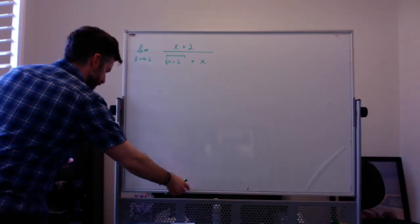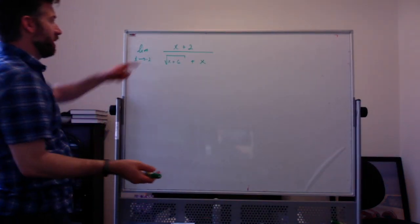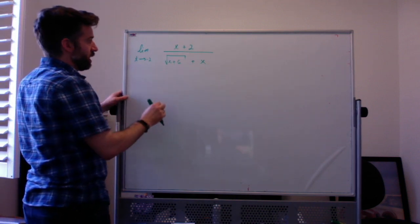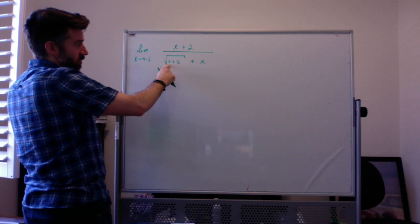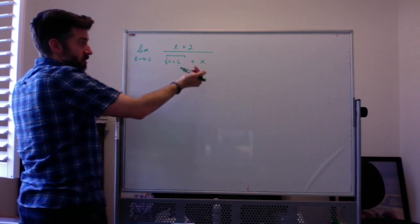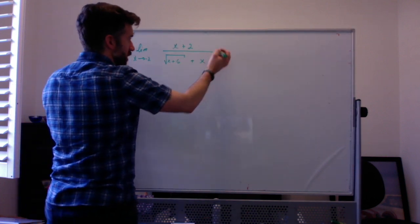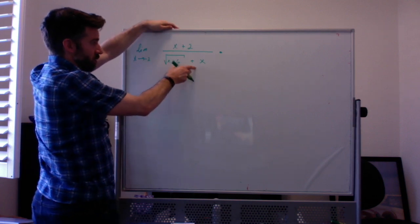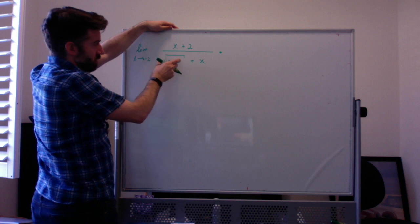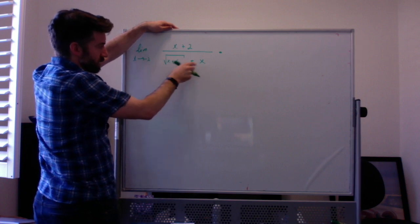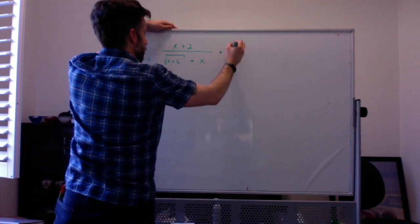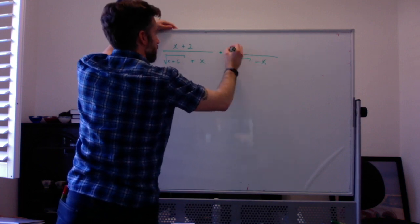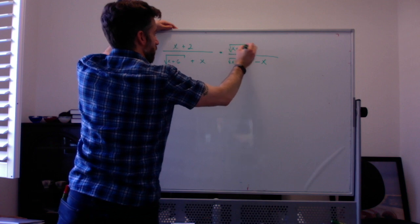Another example: the limit as x goes to negative 2 of x plus 2 over the square root of x plus 6, plus x. Again a 0 over 0 type — plugging in negative 2 gives 0 on top, and the square root of 4 is 2 plus negative 2 is 0 on the bottom. We're going to multiply by the conjugate — not by x minus 2, but by the conjugate of the square root part. The conjugate of this plus this is this minus this, so we multiply by the square root of x plus 6, minus x, over itself.